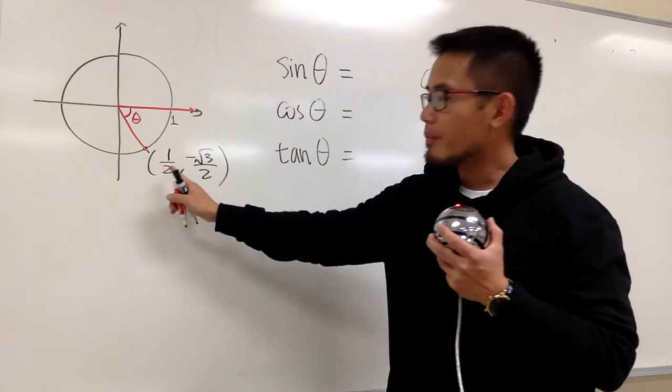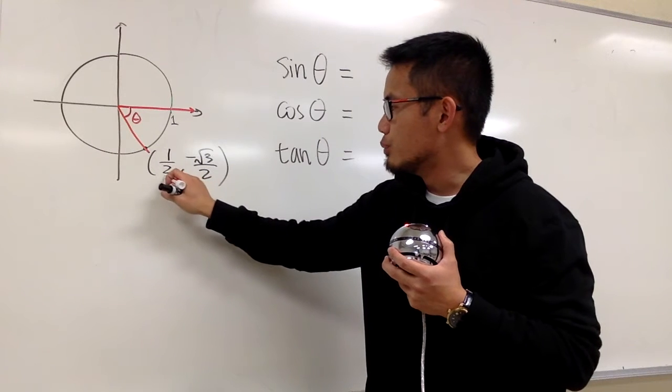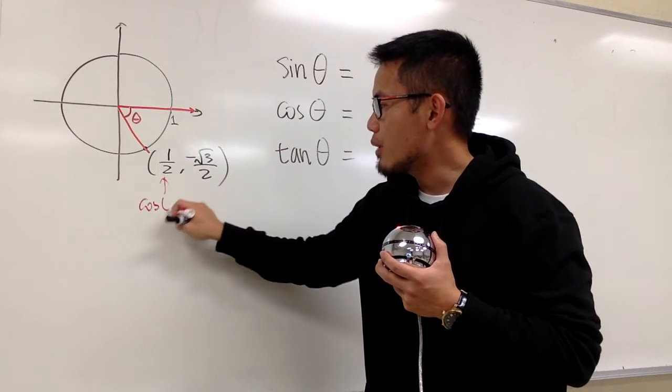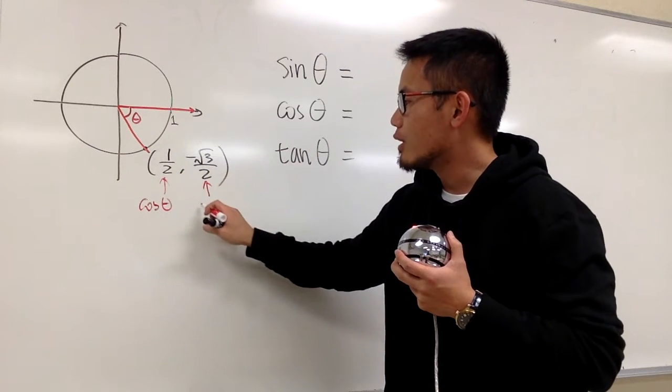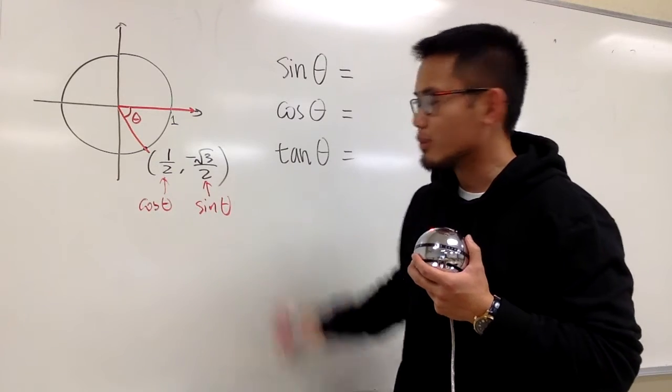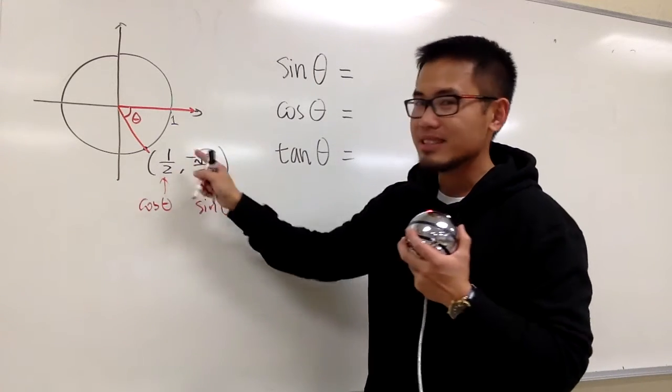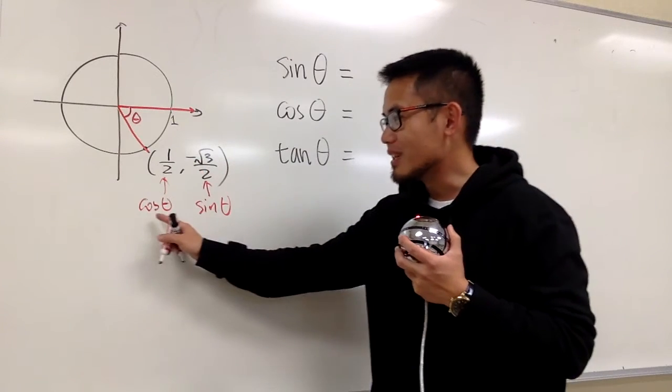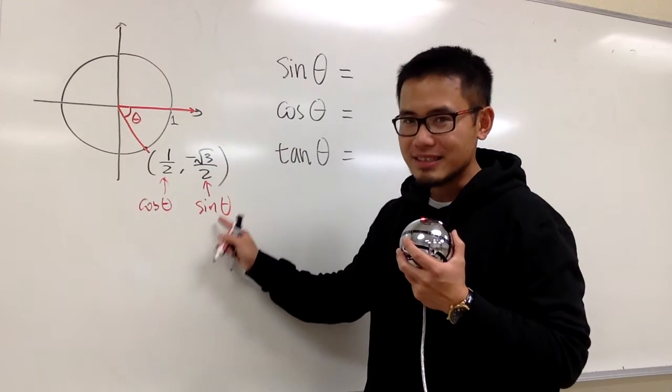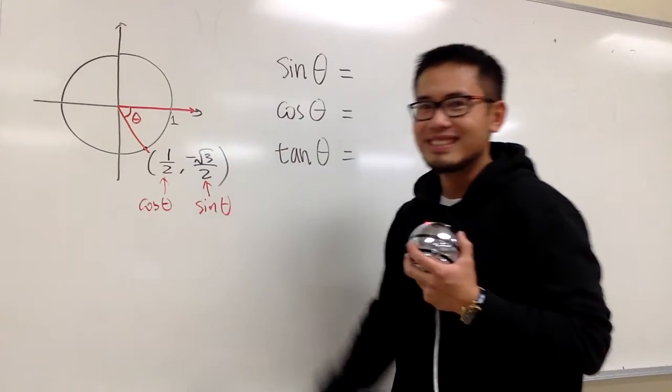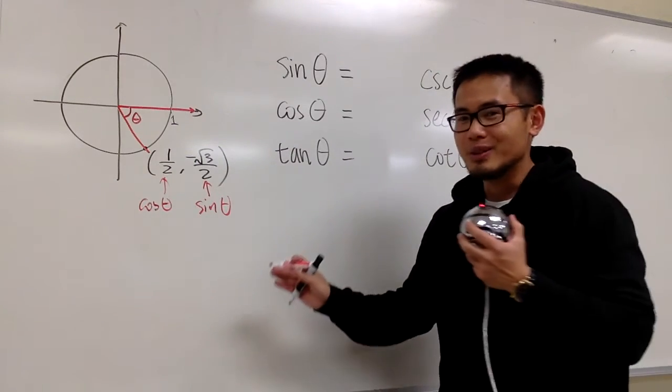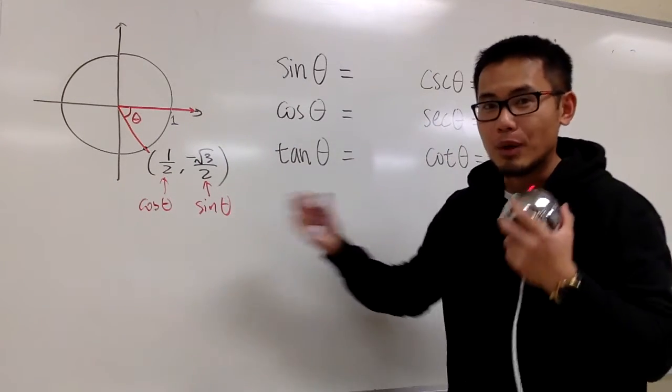Remember, on the unit circle, the x value represents the cosine value, and the y represents the sine value. It's x comma y, and you can also think about cosine then sine – c is in front of s. That's not the right reason, but it will help you remember it.